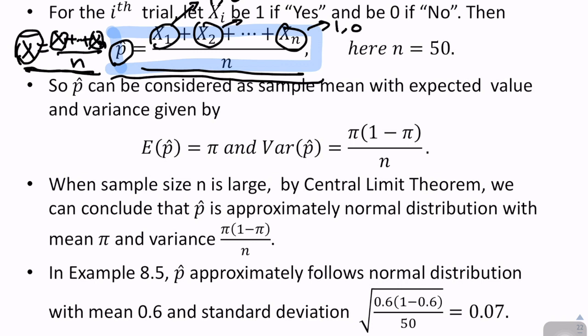So p hat can be considered as sample mean with expected value and variance given by the expectation of p hat is equal to π, and the variance of p hat is equal to this. Why is that? Let's consider the population proportion is π.